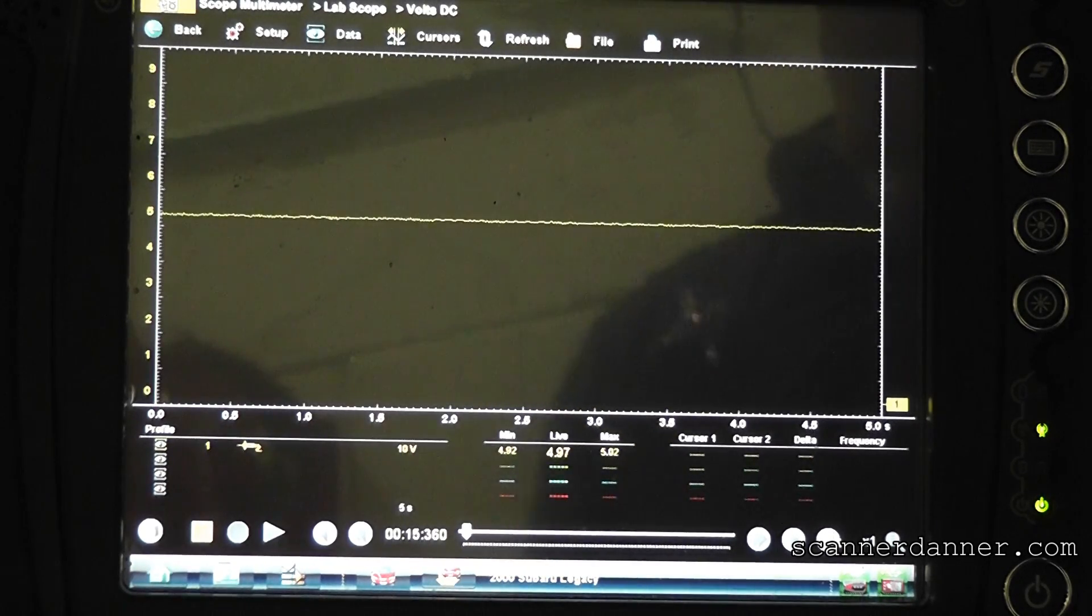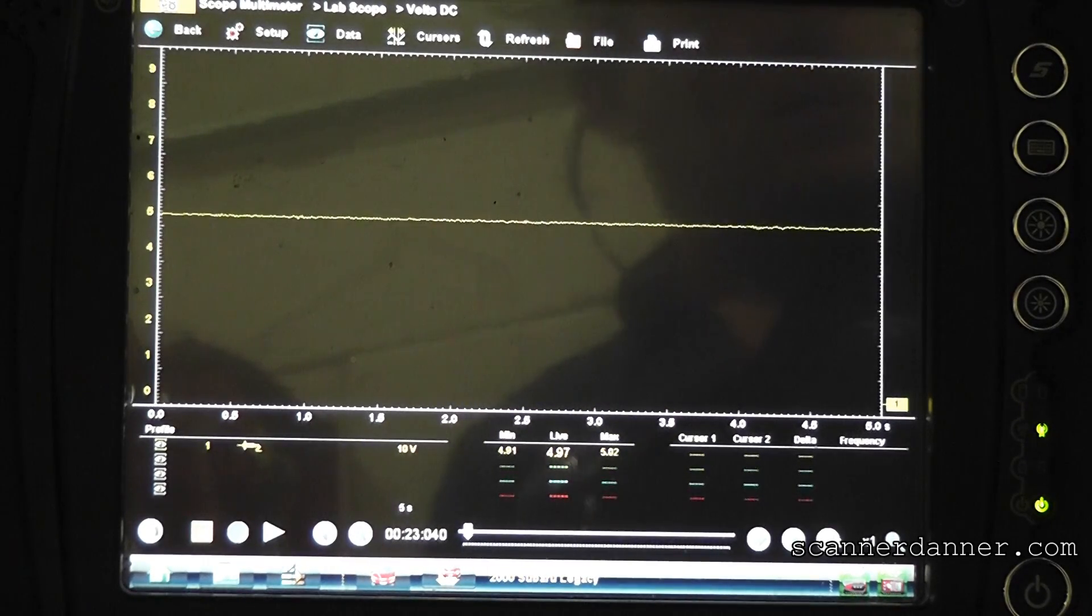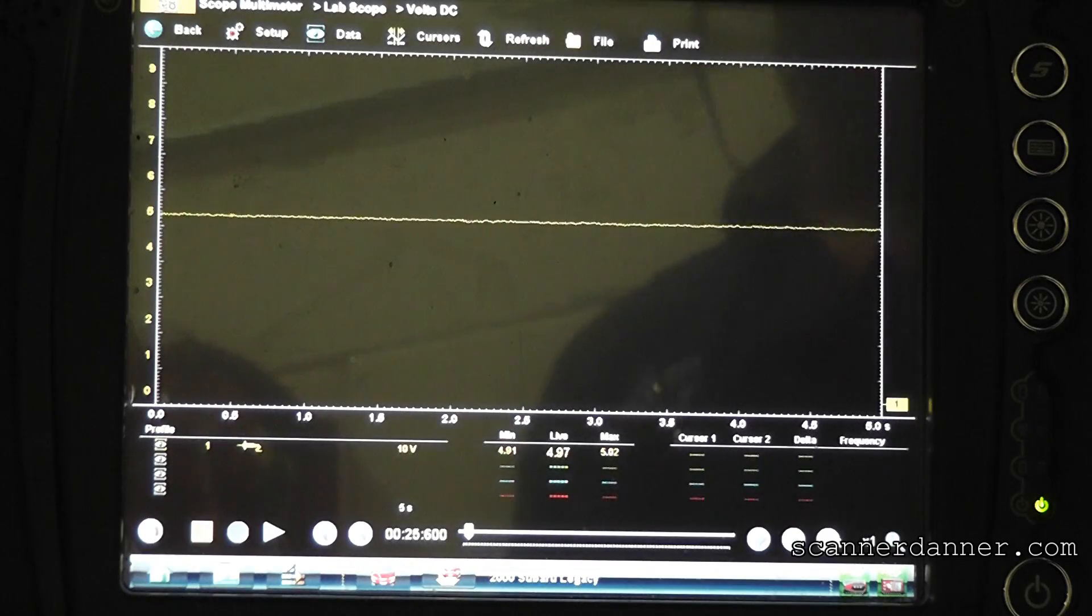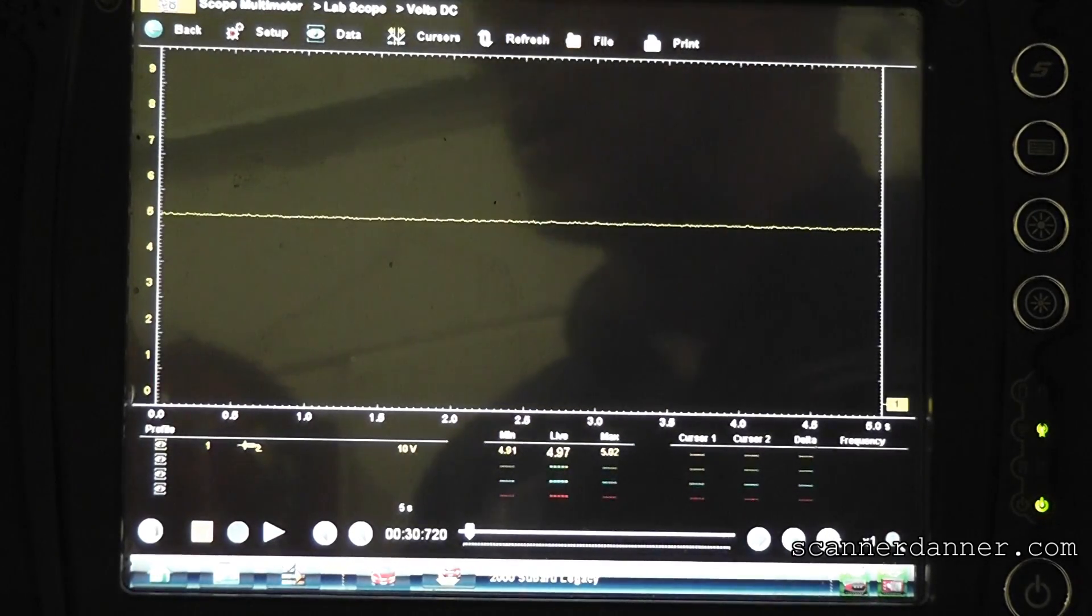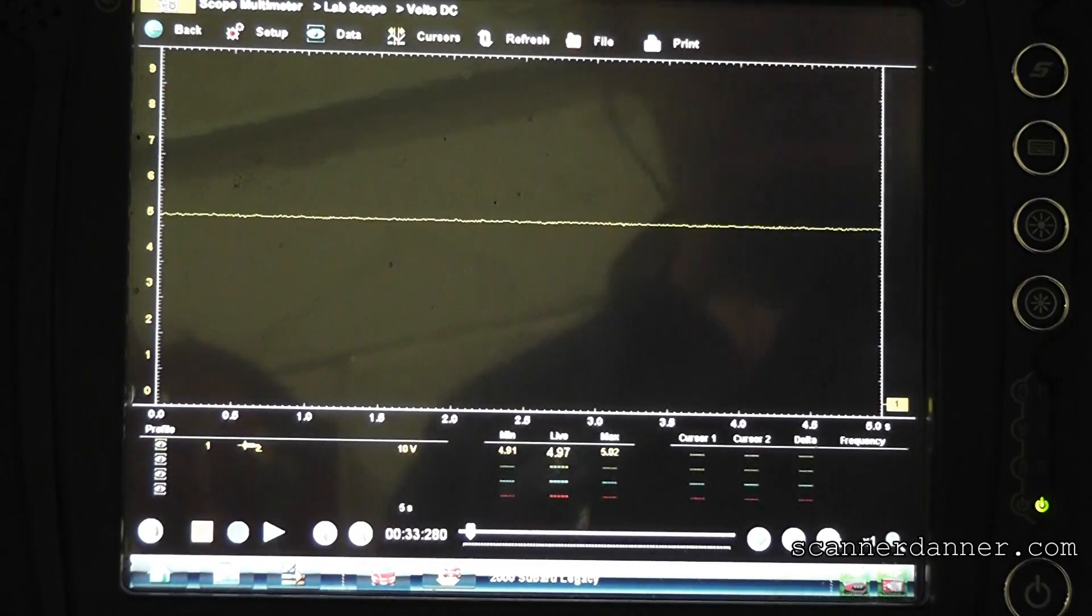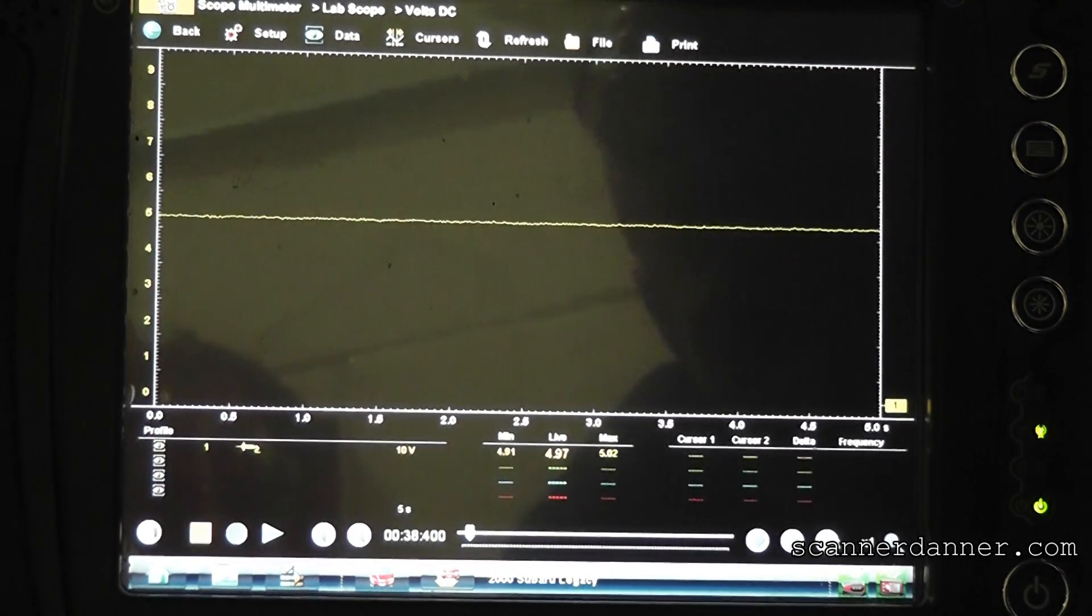And I'm not concerned at least initially of that wiring in between. Now we could wiggle the harness and see if we have any drops or anything like that, that wouldn't be a bad test to do. If that signal changed when you were wiggling the harness, that would indicate a wiring problem between the computer and sensor.